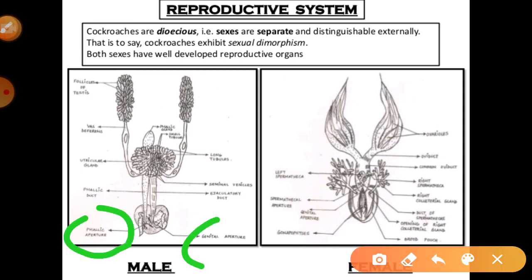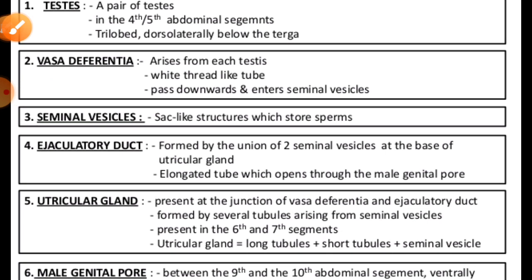The genital aperture is present there. The sperms are surrounded in the seminal vesicles and glued together in the form of a bundle called spermatophores. These spermatophores are discharged during copulation. You need to know the testes, vas deferens, seminal vesicle, ejaculatory duct, utricular glands, and male genital pore. The sperms are surrounded in seminal vesicles and glued together in the form of a bundle called spermatophores, which are discharged during copulation.